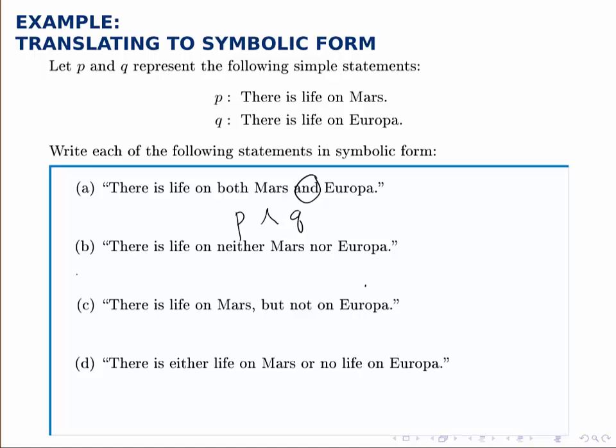For part B, there is life on neither Mars nor Europa. In simple form, that's the same as saying, there is not life on Mars and there is not life on Europa. That's what the neither nor means. So it's not P and not Q. And we write that this way, not P and not Q. And that's the symbolic form for that statement.